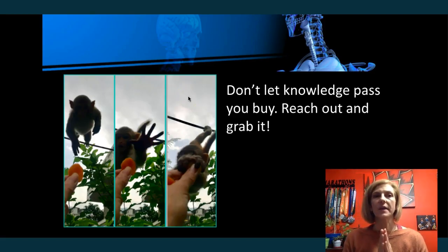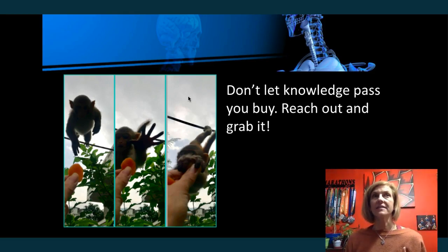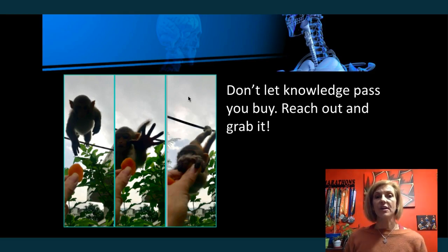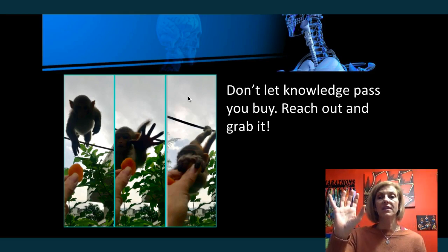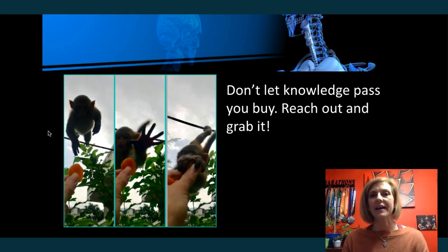The best way to practice the anatomy of the respiratory system is simply to draw it out. It's a pathway — a sequence of events — and our brains like pictures. Test yourself: can you draw all the structures from the nose to the alveoli? Can you identify the changes in the thoracic cavity during inhalation and exhalation? Don't let knowledge pass you by — reach out and grab it. Thanks for watching.